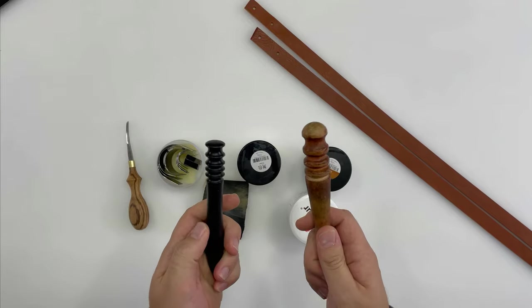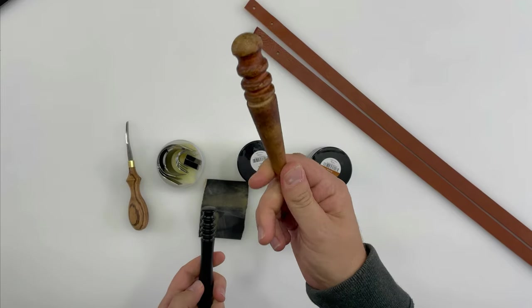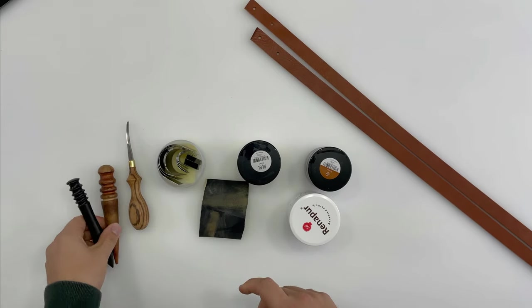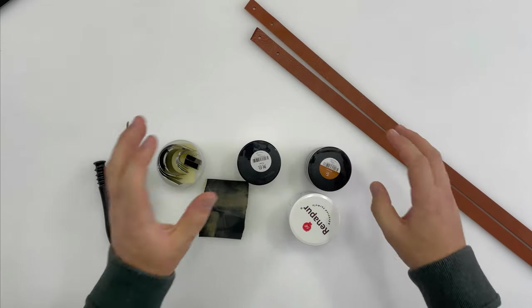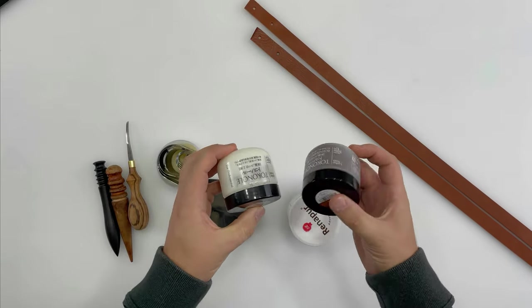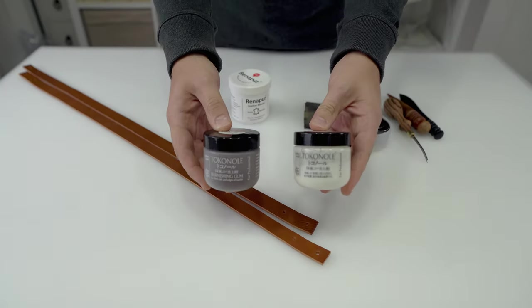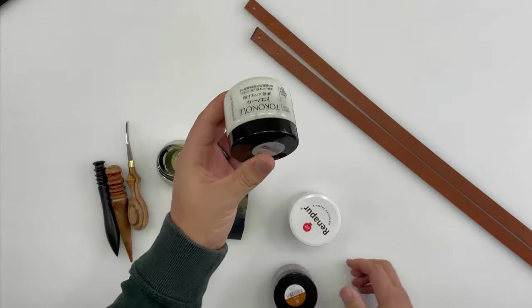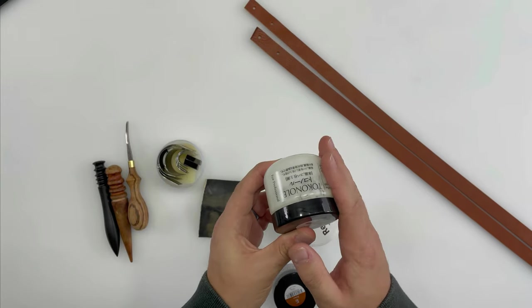You're going to need a slicker - this is like an old tatty one I've had for years, this is a new one which I'm just trying out. You're going to need something to soften and protect the edges, so this is tokenol. It comes in various colors. For today we'll be using the clear, it's easier and more forgiving to work with.